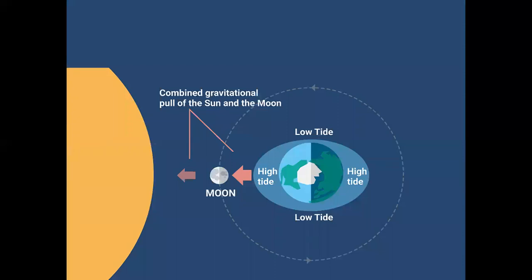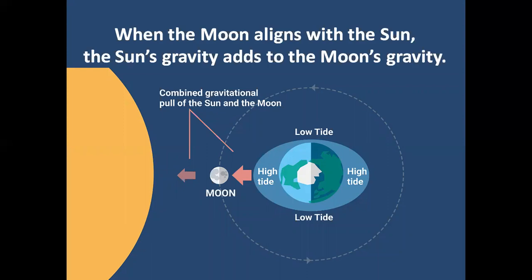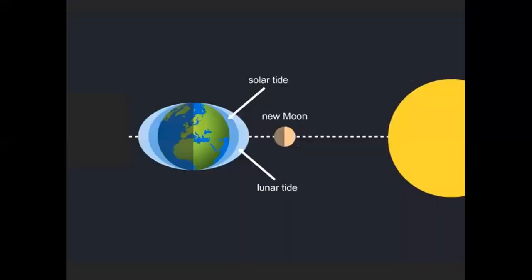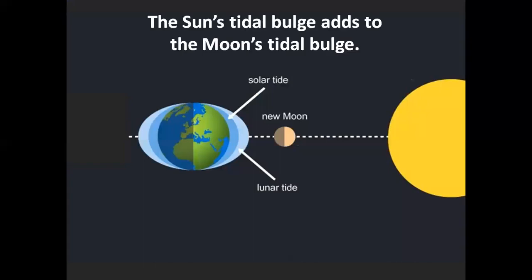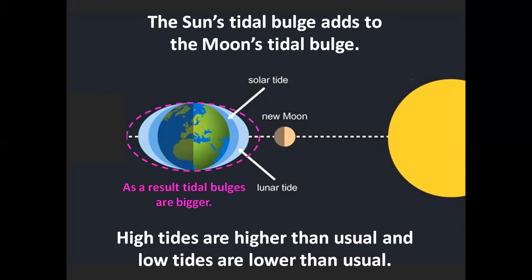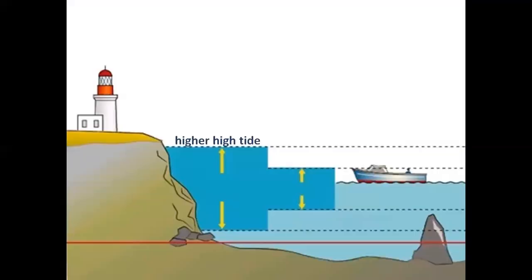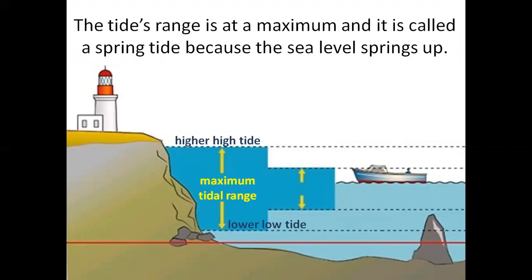The combined gravitational pull of the Sun and the Moon. When the Moon aligns with the Sun, the Sun's gravity adds to the Moon's gravity. The Sun's tidal bulge adds to the Moon's tidal bulge. As a result, tidal bulges are bigger. High tides are higher than usual and low tides are lower than usual. This occurs at new Moon and at full Moon. We have a higher high tide and a lower low tide, a maximum tidal range. The tide's range is at a maximum and it is called a spring tide because the sea level springs up. It rises up. It jumps up.